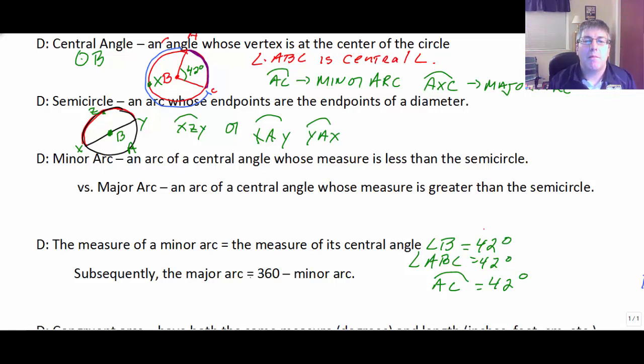Subsequently, the major arc is 360 minus the minor arc. So arc AXC from up here at the beginning, arc AXC is equal to 360 minus 42. If my arithmetic is correct, that would be 318 degrees.